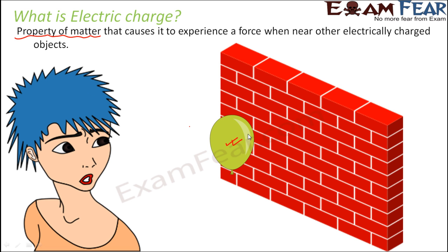Attraction means two objects tending to come near each other — there is a force which tries to bring the two objects closer. Similarly, if there exists a force which tends to take the objects away from each other, that is repulsion. Every object will have a property due to which it will experience a force when near an electrically charged object. In this case, the balloon is electrically charged, so when it is near the wall, the wall experiences a force due to the presence of the charged balloon — and that is why the balloon sticks to the wall.